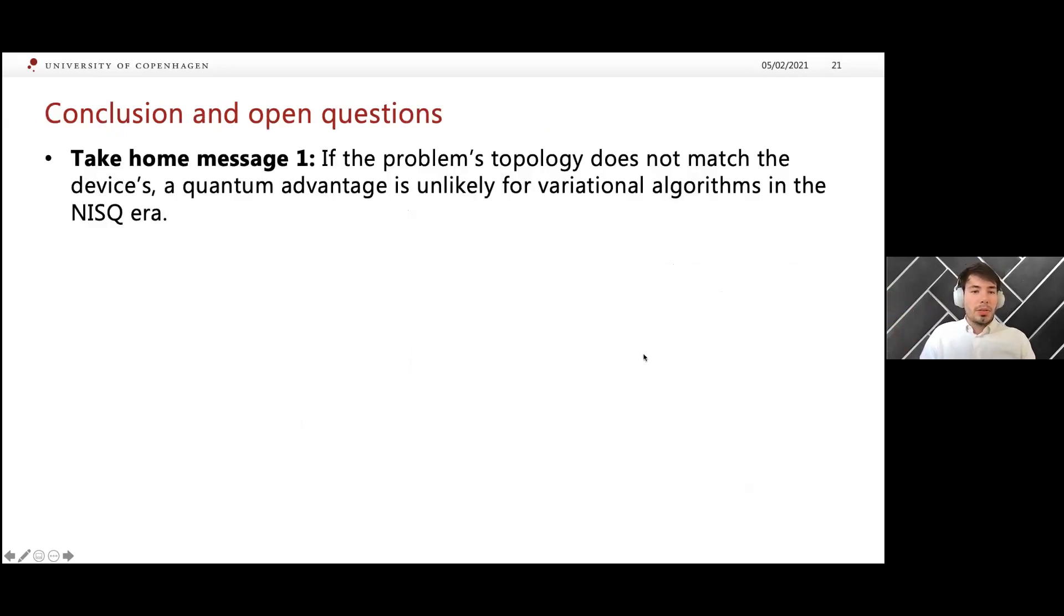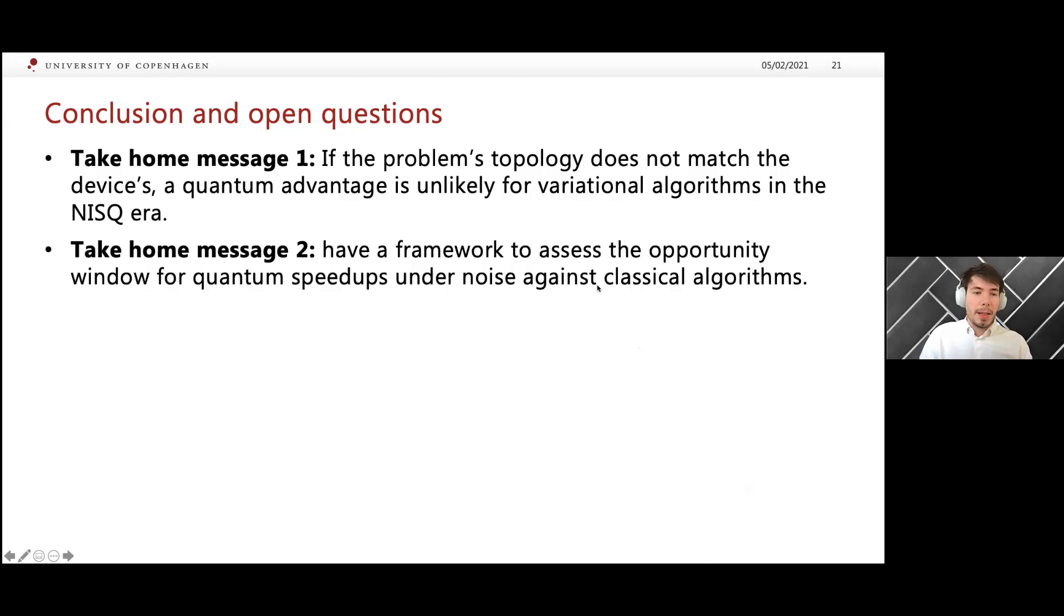Let me conclude. The take-home message number one is that if the problem topology does not match the device's, then it's unlikely you have a quantum speedup for variational algorithms. Take-home message two is that we now have this easy framework to estimate the opportunity window for quantum speedups in optimization problems.